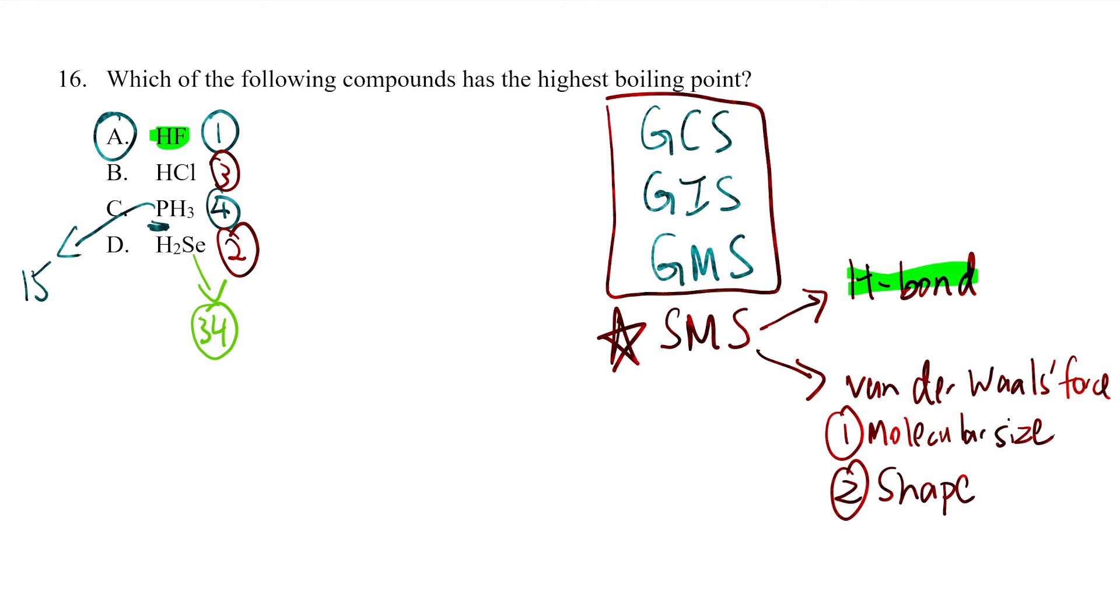You first check whether there are any of these top three structures. If no, then you look at simple molecular structure and see if there's hydrogen bonding. If there's still no, then you look at their molecular size and shape. So there you go, the answer is A.